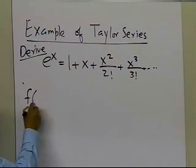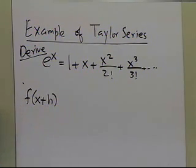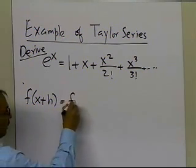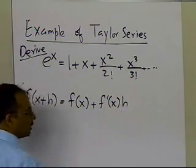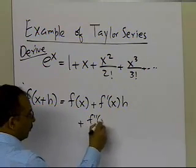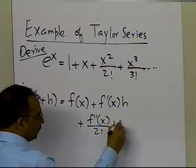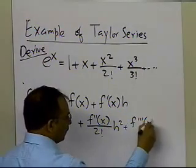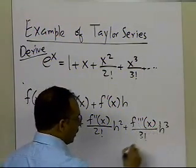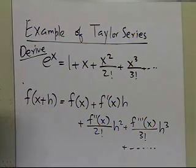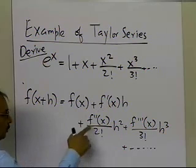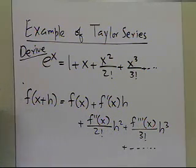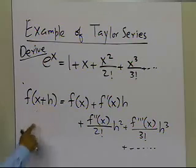If you look at Taylor's theorem, the value of the function at x plus h is given by the value of the function at x, plus the first derivative of the function at x, plus the second derivative at x, plus the third derivative at x, and all the other derivatives. So it's not just a question of knowing the first few derivatives, but also knowing the function itself, and all its derivatives at that particular point. From this, you can find the value of the function at some other point.